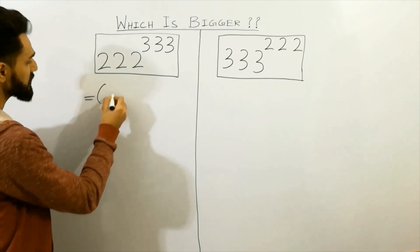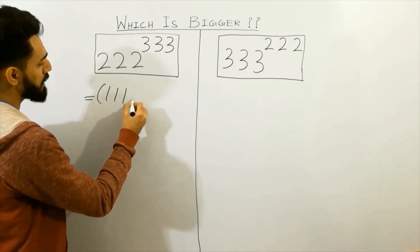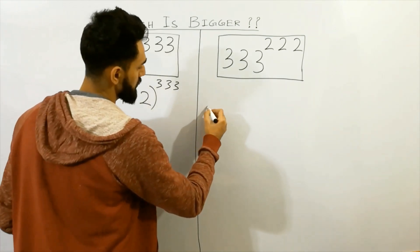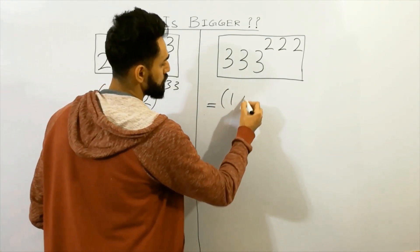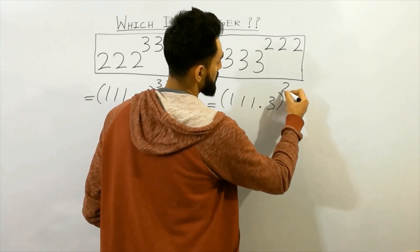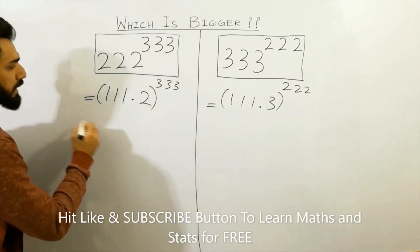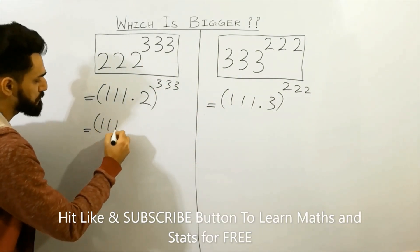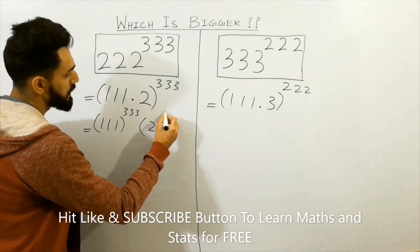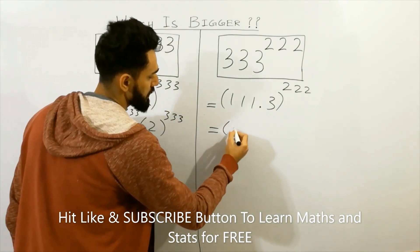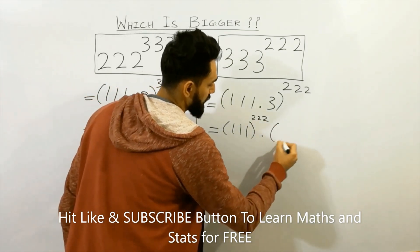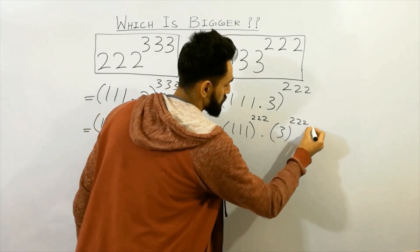This can also be written as triple one multiplied by triple two raised to power triple three. Similarly, it can also be written as triple one multiplied by three, equal to raised to power triple two. Next, triple one raised to power triple three, and similarly you can do that here — triple one raised to power triple two and raised to power three raised to power triple two.